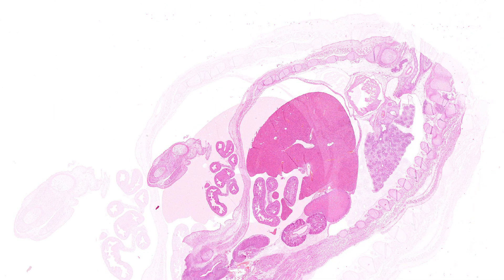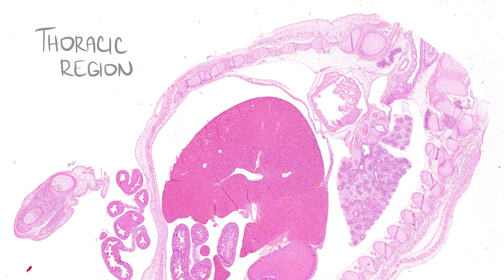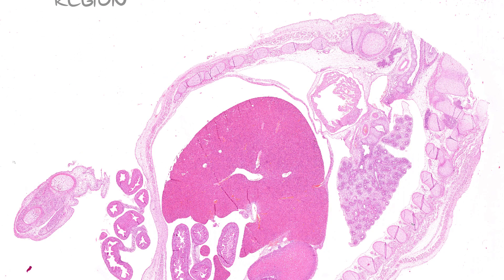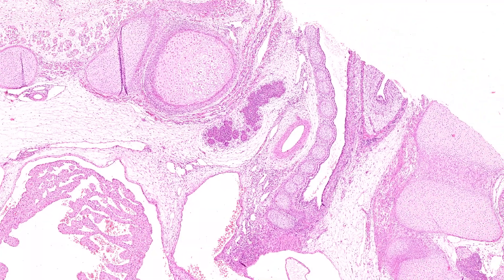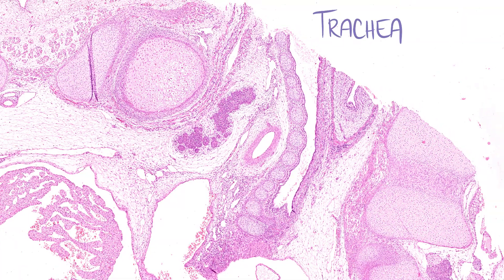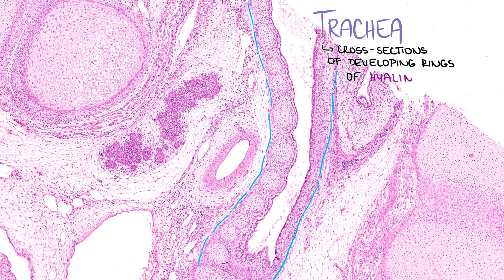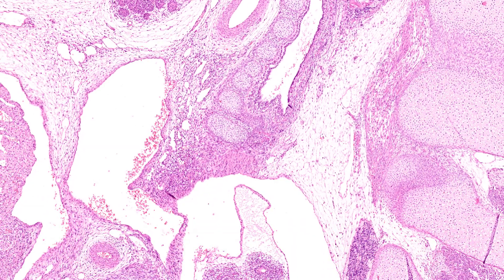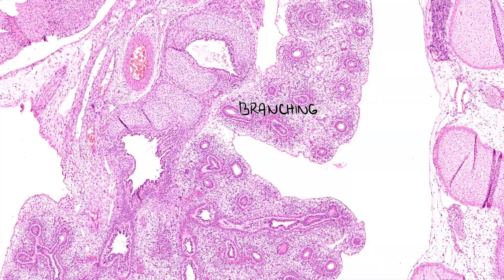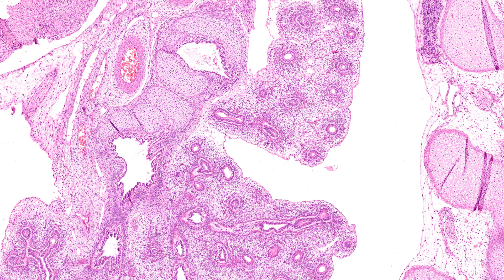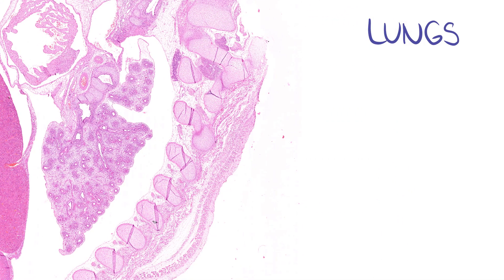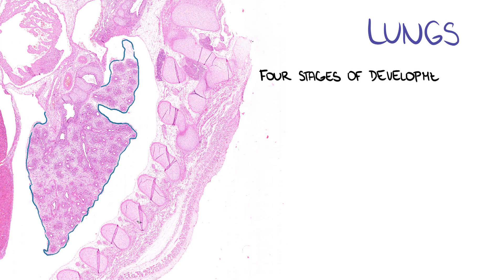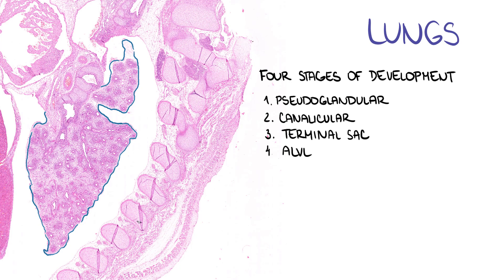Cranially we can observe the thoracic region, where I begin by describing the respiratory system. We can see a sagittal section of the trachea with cross sections of developing rings of hyaline cartilage in its wall. We proceed to the area below, where we can see branching of the bronchi and reach the lungs. We distinguish 4 stages of lung development: namely the pseudoglandular, canalicular, terminal sac, and the alveolar stage.